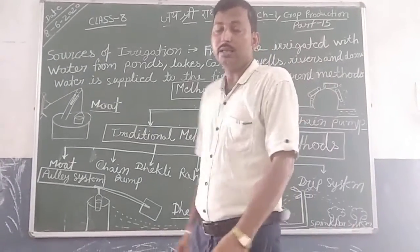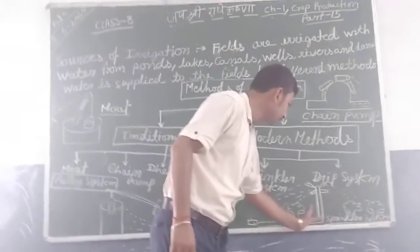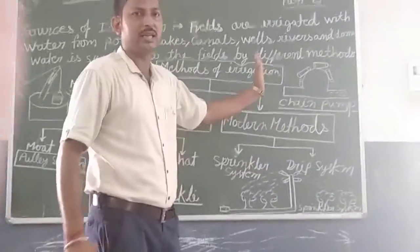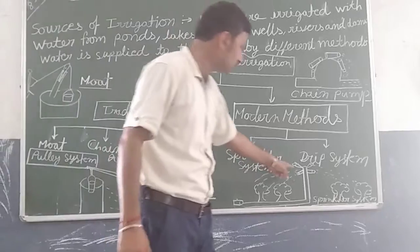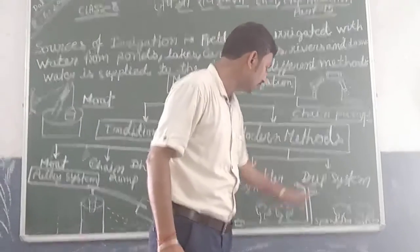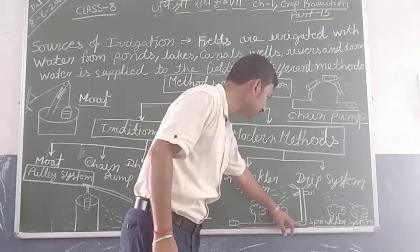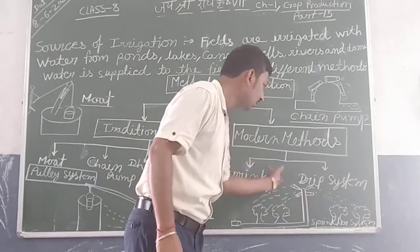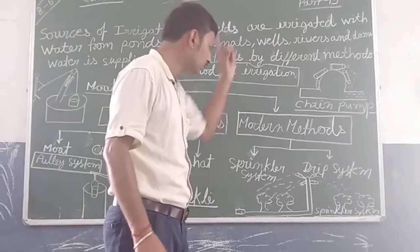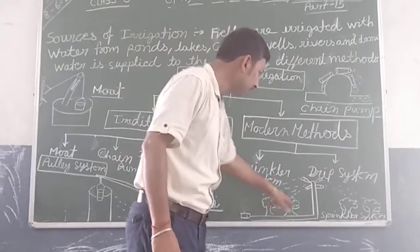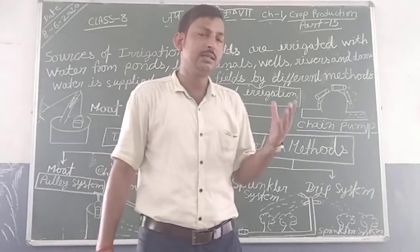What is the sprinkling system? We have a pipe in the middle with a nozzle at the gate. The pipe carries water forcefully and sprinkles it over the crops.